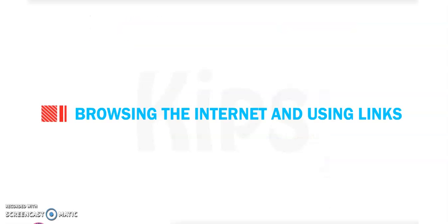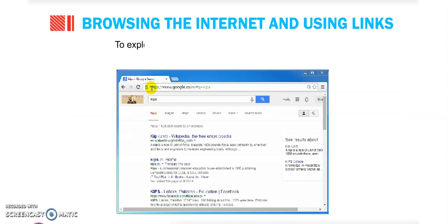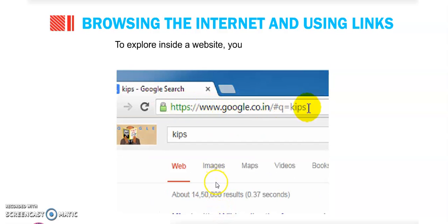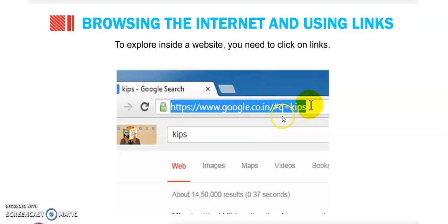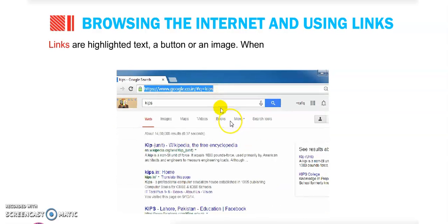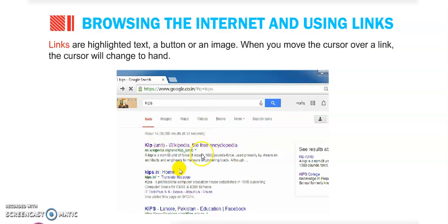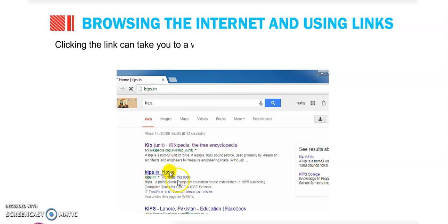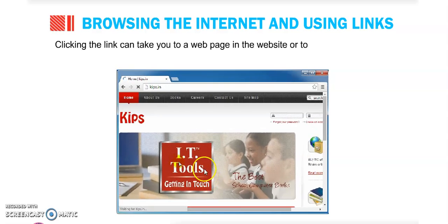Next is browsing the internet and using links. How can we browse the internet and search for information? To explore inside a website, you need to click on links. This is called browsing or surfing the web. Links are highlighted text, a button, or an image. When you move the cursor over a link, the cursor changes to a hand sign, which means clicking the link can take you to a webpage or a different website.